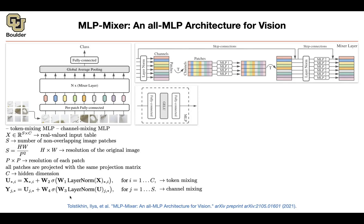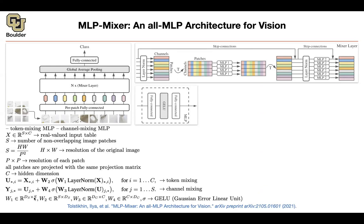Now you are mixing the channels. These are the dimensions of your matrices. If you pick one of the columns in your X, that's going to be S-dimensional. You multiply it by a matrix taking you from dimension S to dimension DS, and W2 takes you from DS back to S. Then you can add the residual connection. The non-linearity used here is GELU — Gaussian error linear unit — a smooth approximation of ReLU.